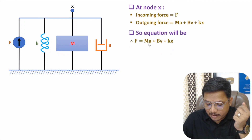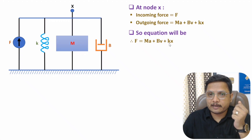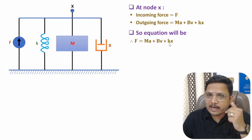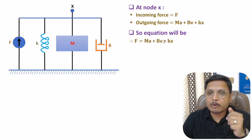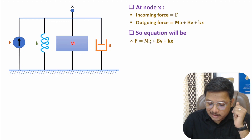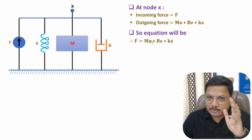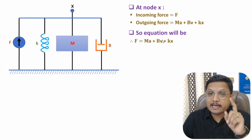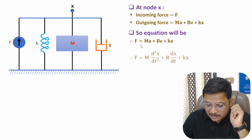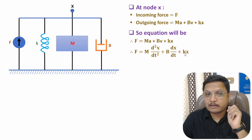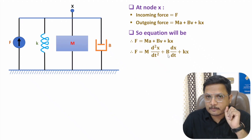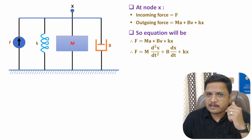To write the differential equation, represent acceleration and velocity in terms of displacement. Acceleration is d²x/dt² and velocity is dx/dt. Substituting these gives the differential equation in time domain: f = m(d²x/dt²) + b(dx/dt) + kx.